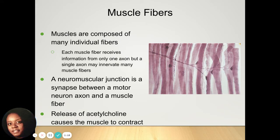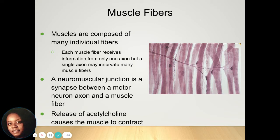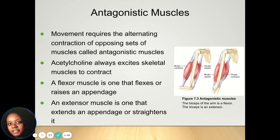Your muscles are composed of many individual fibers. Those fibers receive information from an axon and send that information into your muscle fibers. A neuromuscular junction is the synapse that exists between a motor neuron and a muscle fiber. It releases acetylcholine, which causes your muscles to contract and react to each other. An antagonistic muscle is a movement that requires alternating contractions of the opposite muscles.